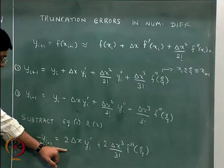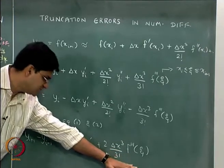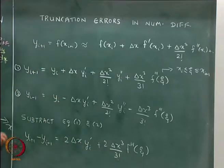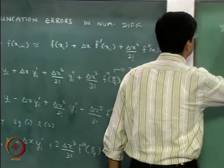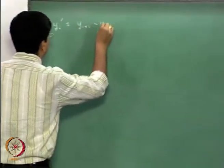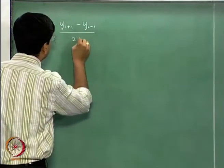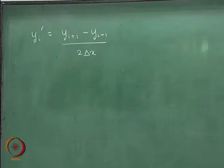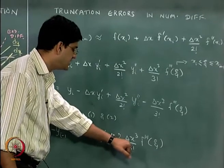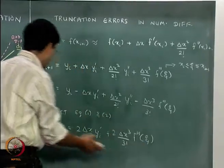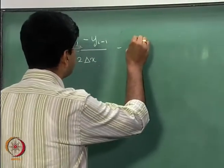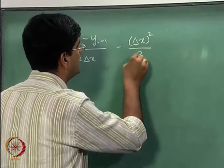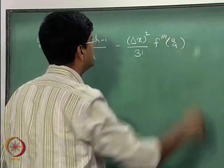We divide throughout by 2 delta x and rearrange, and we will get the final result: y'(i) is equal to y(i+1) minus y(i-1) divided by 2 delta x. This 2 and the other 2 cancel, so instead of delta x cubed we have delta x squared, and because we moved this term to the other side it gets a negative sign, giving minus delta x squared by 3 factorial times f triple dash of zeta.